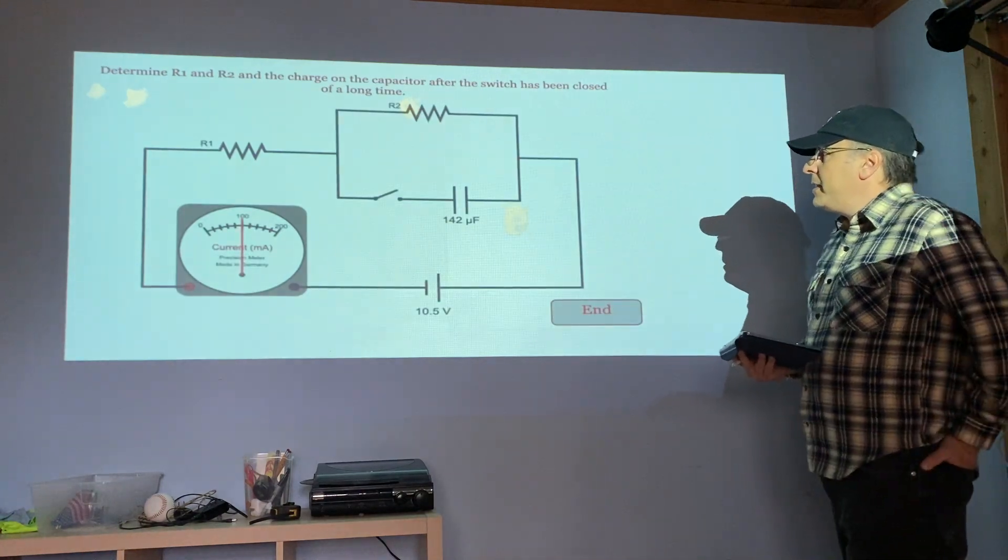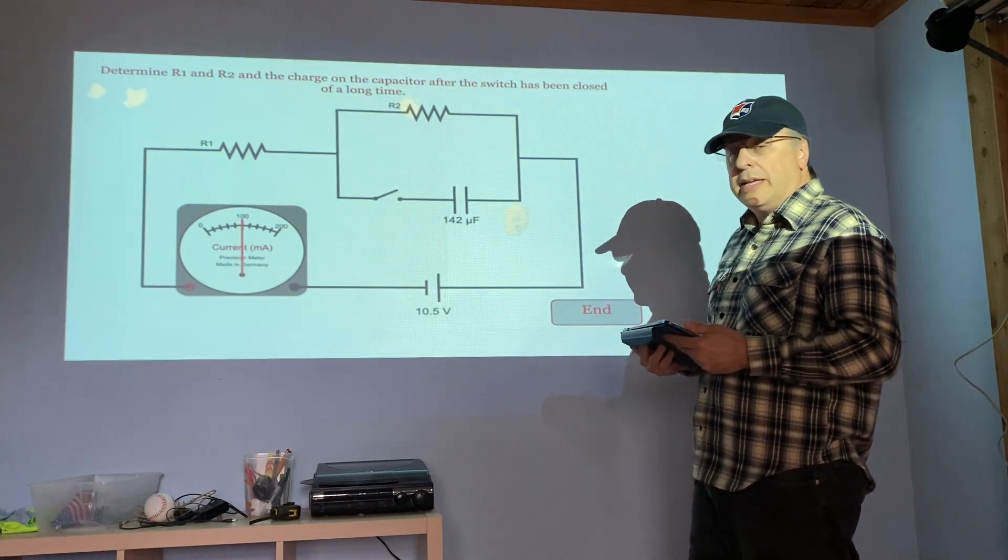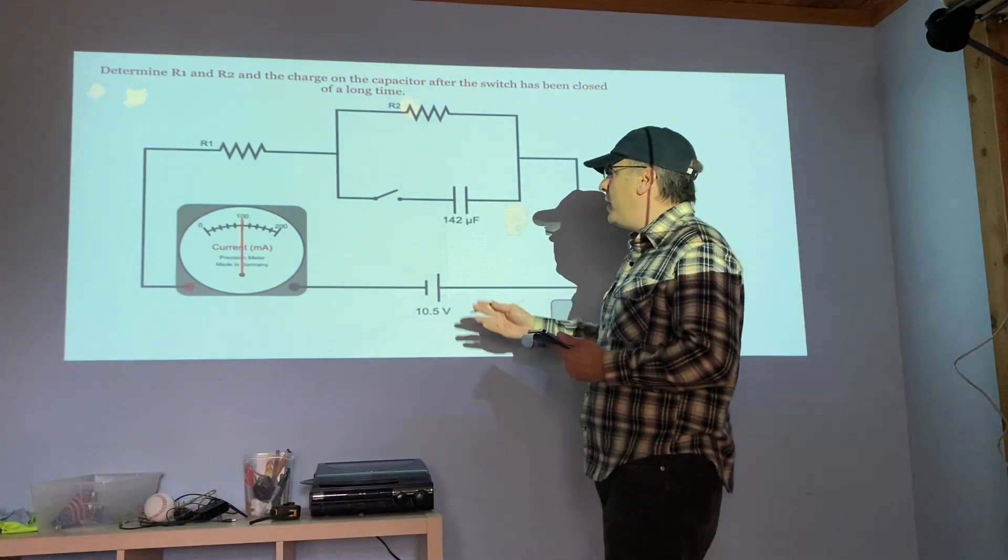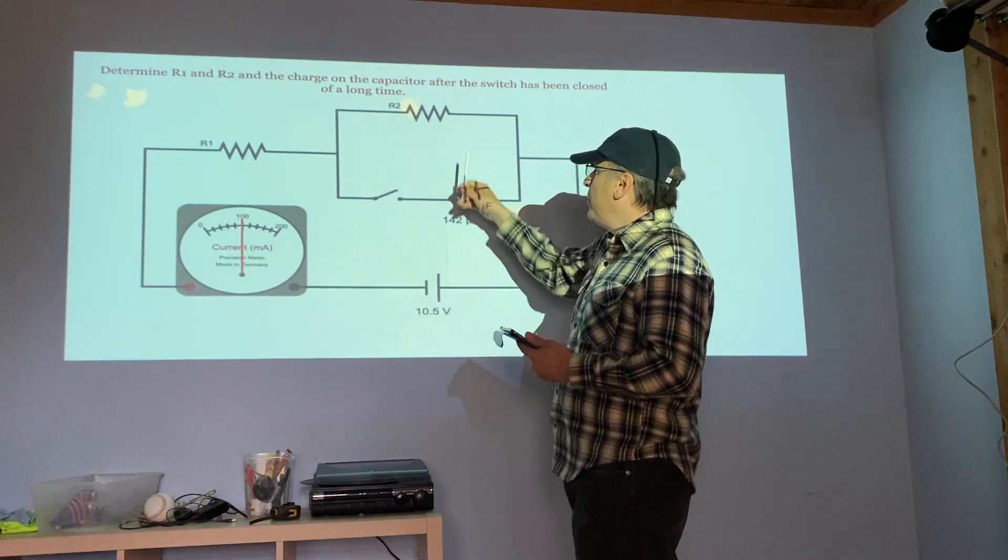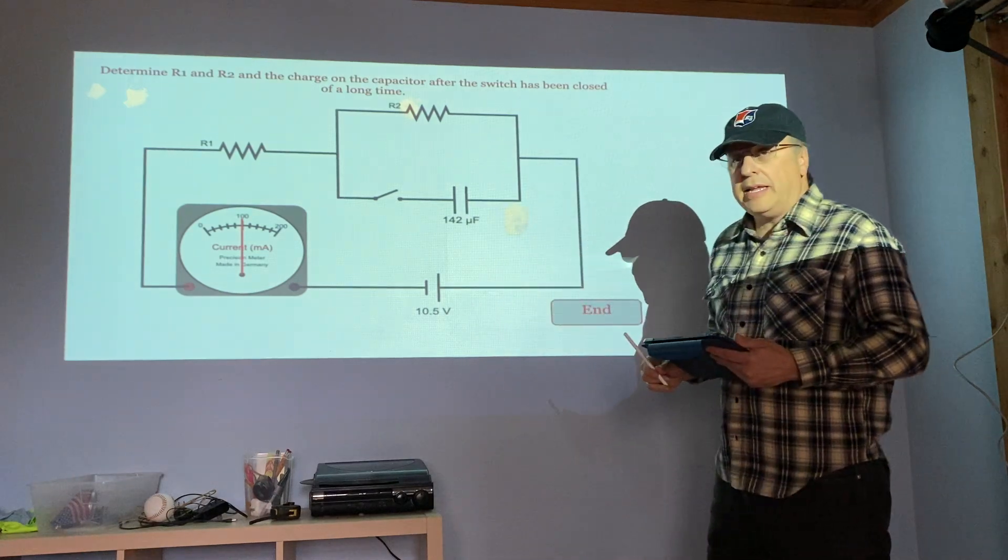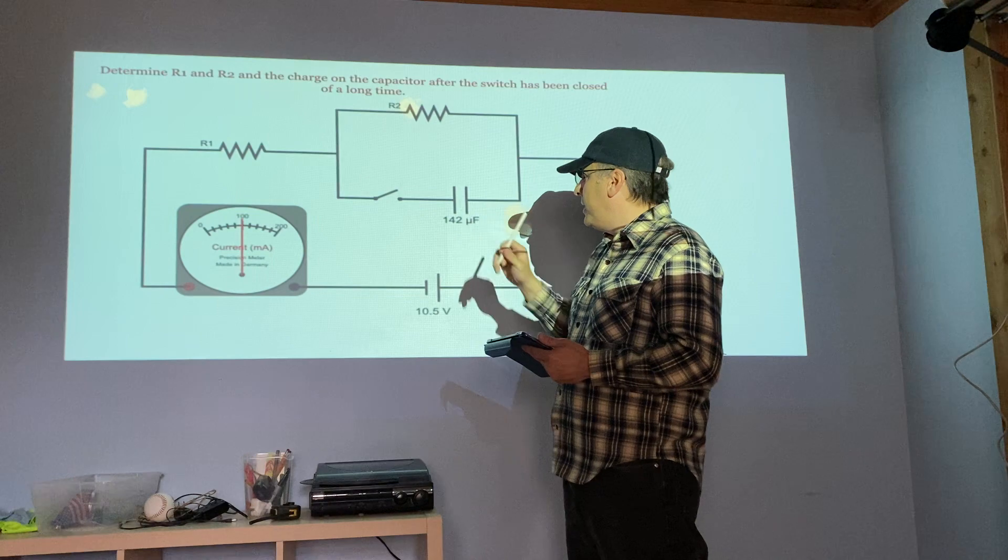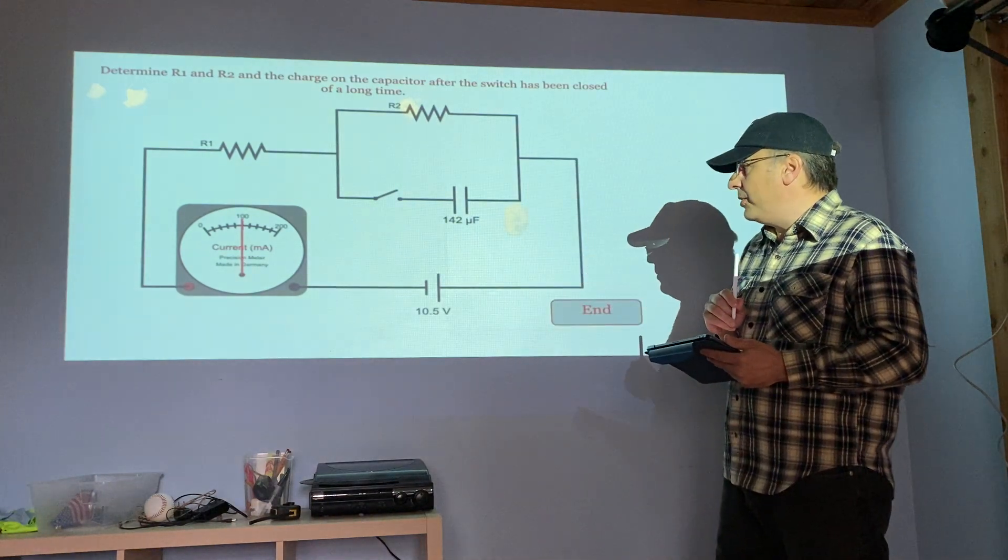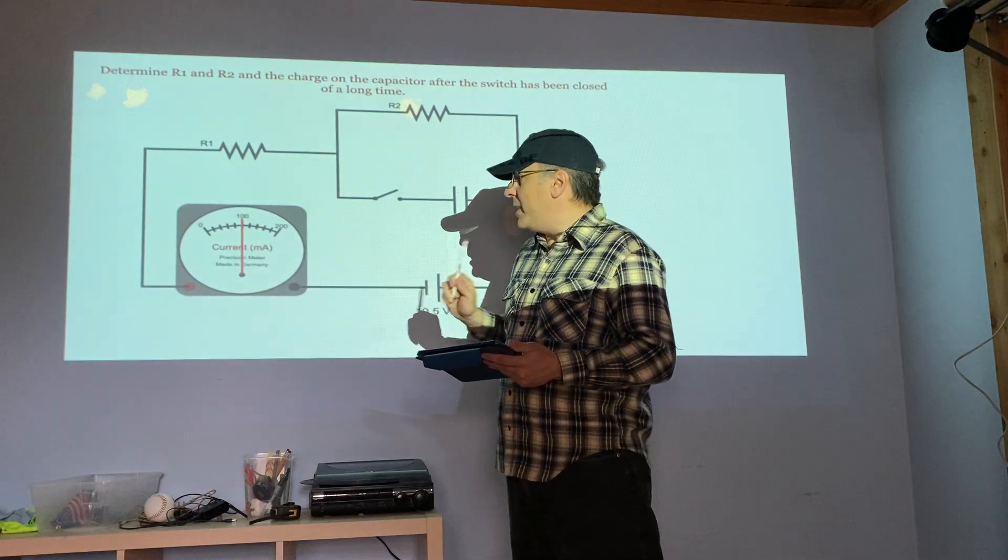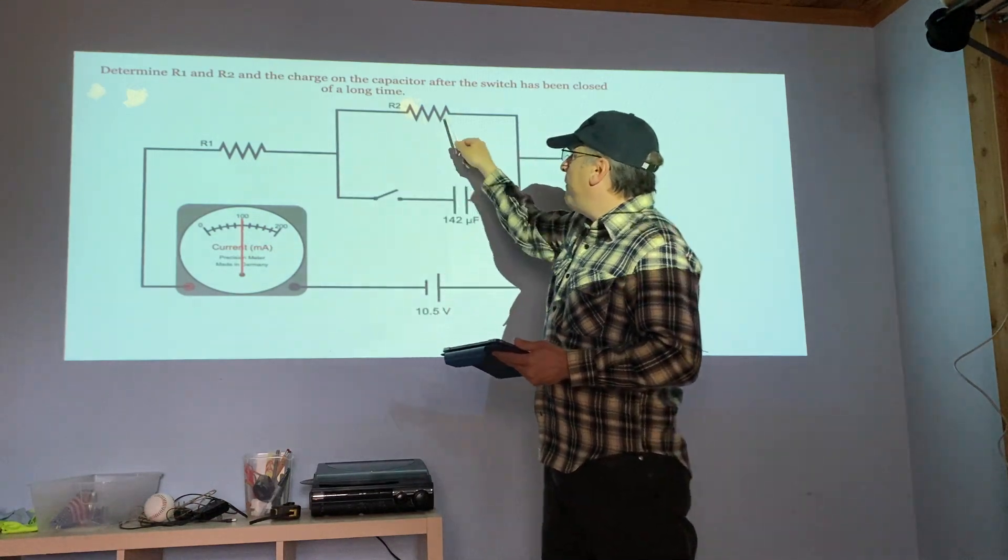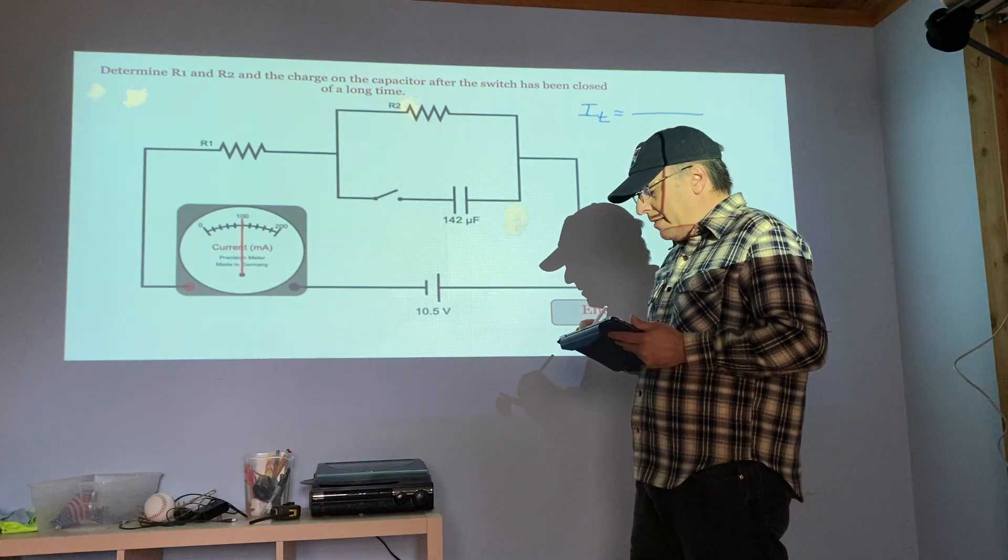Now we'd like to combine what we did yesterday with what we did today and see if you can handle this. We've got two resistors, we've got a capacitor connected in parallel, and we've got our switch that is working with this capacitor only. We start with this current just like yesterday, that's the current when you have both R1 and R2 active, so you can start out.